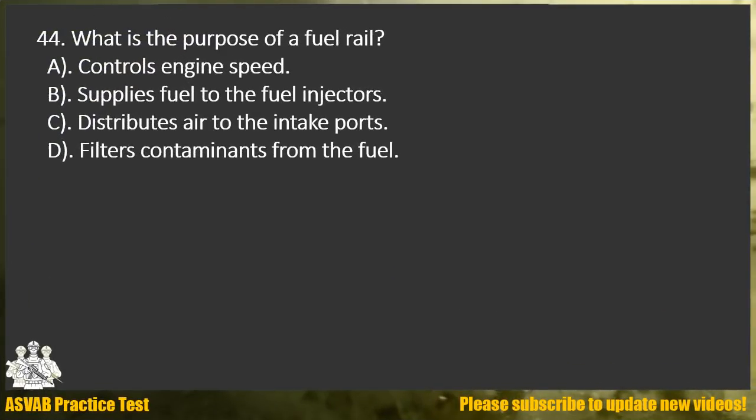Question 44. What is the purpose of a fuel rail? A. Controls engine speed. B. Supplies fuel to the fuel injectors. C. Distributes air to the intake ports. D. Filters contaminants from the fuel.